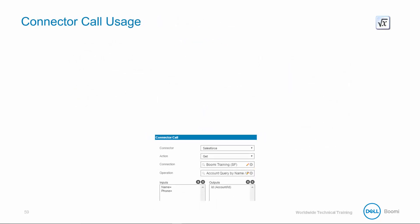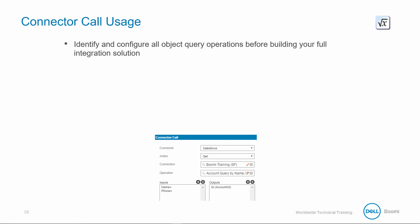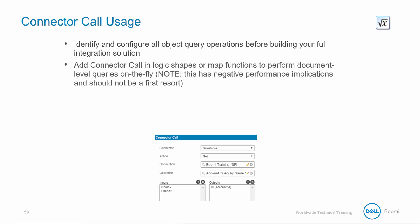When performing a lookup against a web API, consider using the connector call option in the following ways. First, identify and configure all object query operations before building your integration solution — this is a good design tactic to save development time. Add a connector call in logic steps or map functions to perform document-level queries on the fly. This will negatively impact performance, so this should not be a first resort. You can enable caching, which is a default option in the map functions, to limit the number of API requests for common input records.